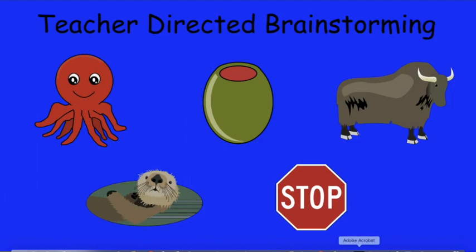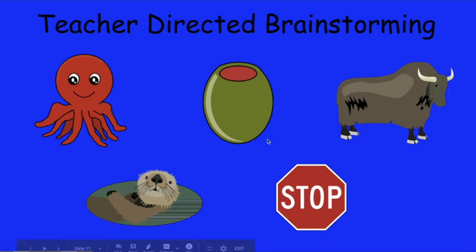Boys and girls, you can take a look at these pictures, and before I say what they are, I want you to say what they are. What are these pictures of, and what sounds do they make at the beginning? This is ah, ah, octopus. Ah, ah, olive. Ah, ah, ox. Ah, ah, otter. And this shape is ah, ah, octagon.